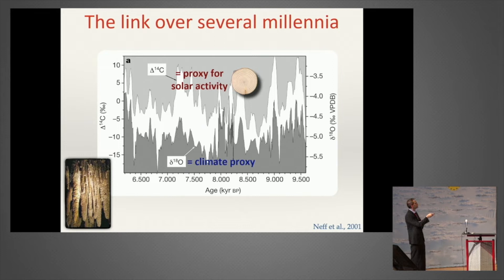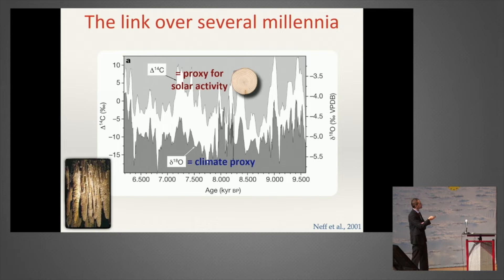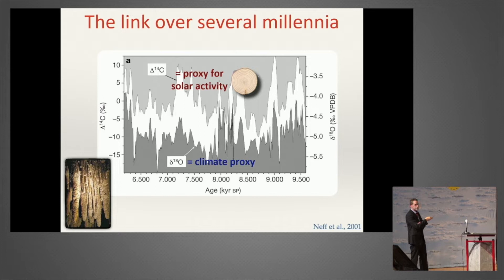At the bottom, you have the isotope ratio of oxygen-18 to oxygen-16. Oxygen-18 is heavier than oxygen-16, so the evaporation rate is different for the different isotopes, and it depends on temperature. What you have here is basically a proxy of the temperature of the Indian Ocean, from stalagmites in a cave in Oman, in the southern Arabian Peninsula. And there is a nice correlation between the two.